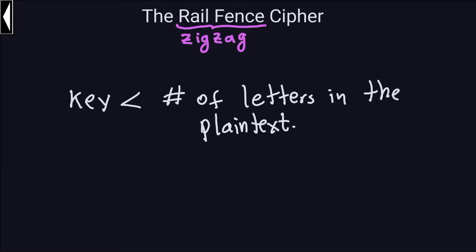Hello and welcome again. In the previous video we mentioned that for the Rail Fence cipher or zigzag cipher, when we have our key, our key should be strictly less than the number of letters or characters in the plaintext. And there's a reason for that.